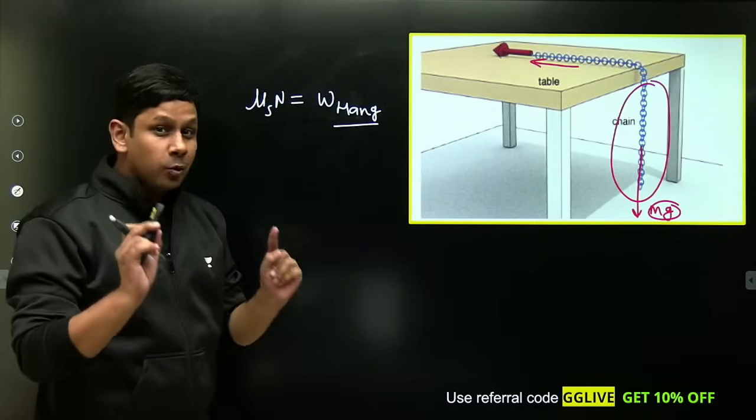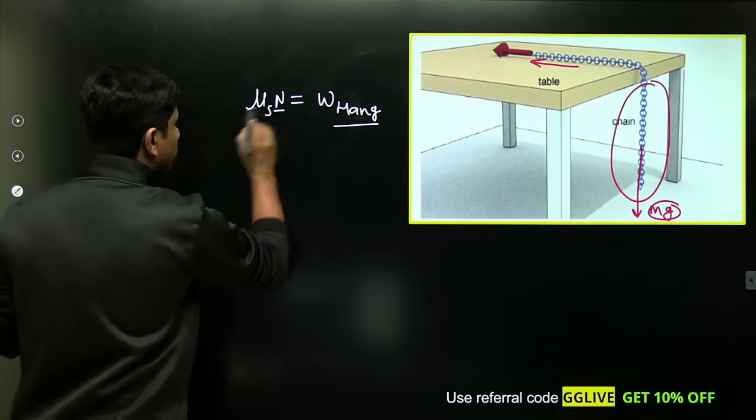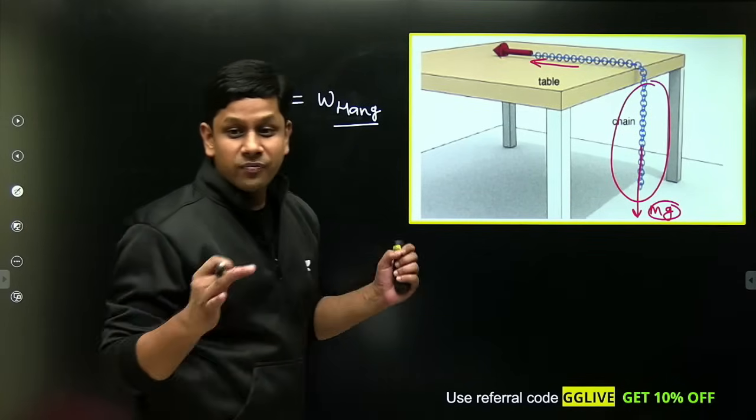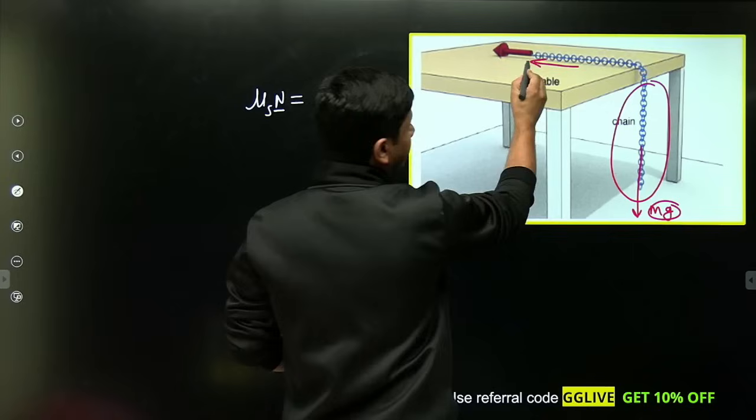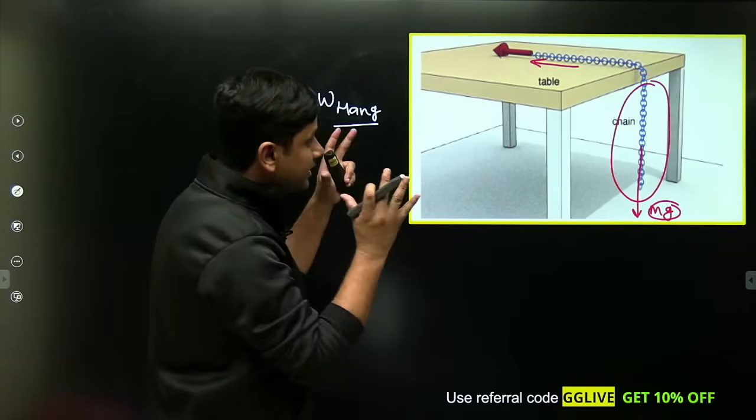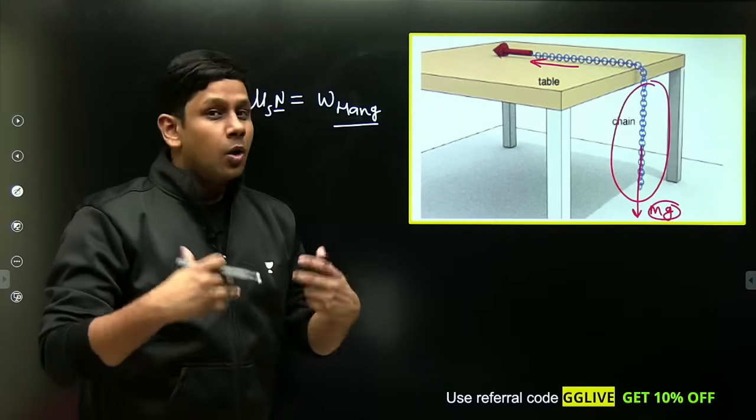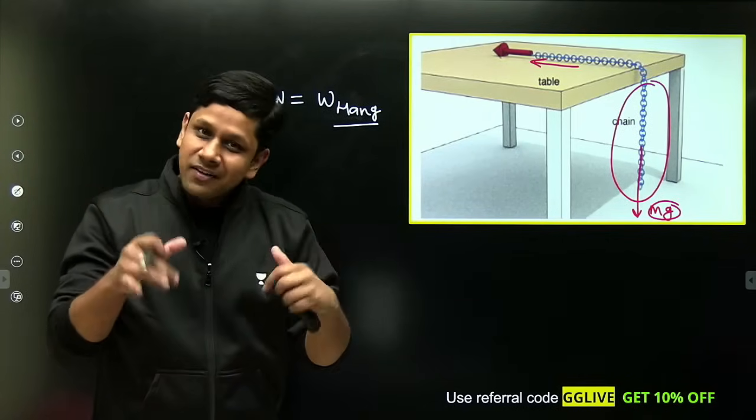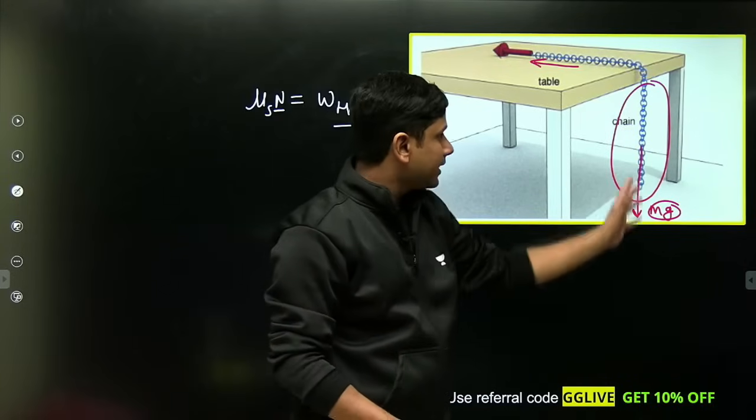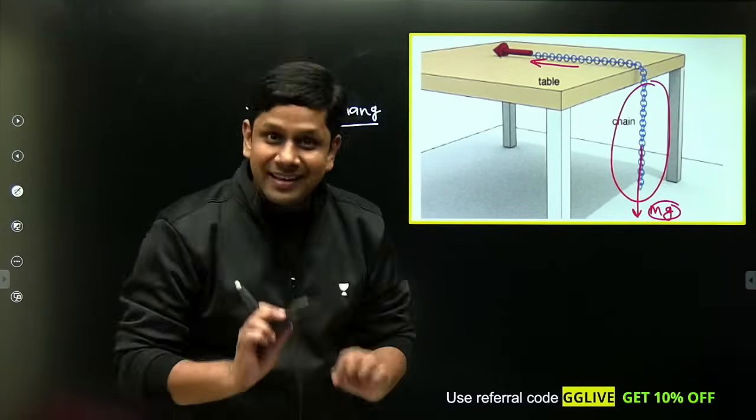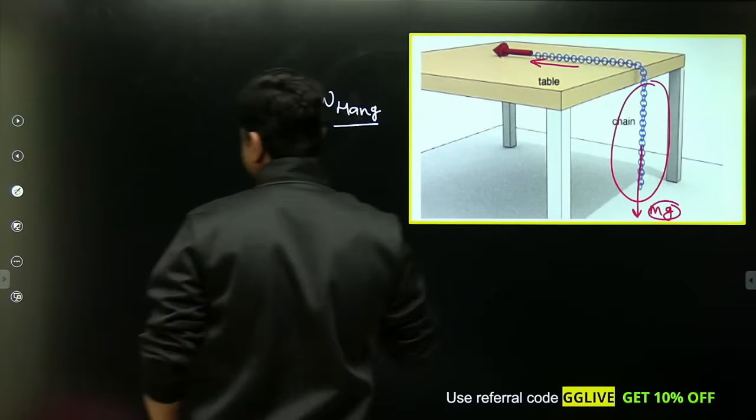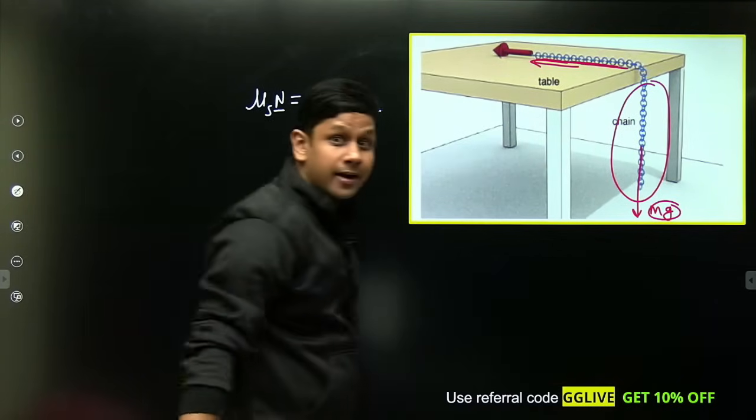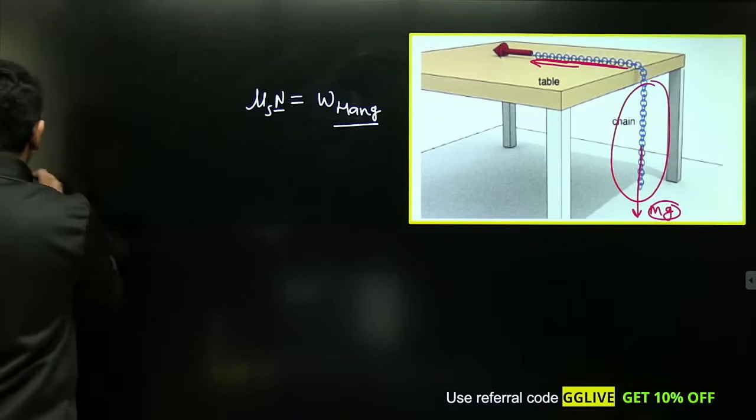Now the most important part is: this normal force will be produced by how much weight? The entire chain length is not on the table, only some part is on the table. Only that length which is in contact with the table will create the normal force. The hanging part is not creating any normal force as it's not in contact with the table.